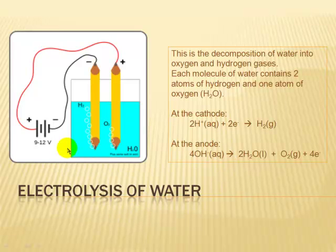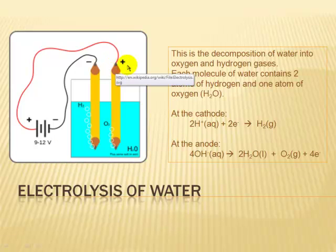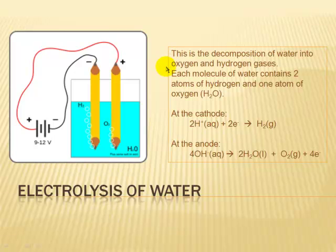Here's a very simple diagram showing a setup you can have at home. You can see there are actually two pencils. The key thing here is the graphite — the graphite acts as electrodes. This is a decomposition of water into oxygen and hydrogen gases. Each molecule of water contains two atoms of hydrogen and one atom of oxygen.